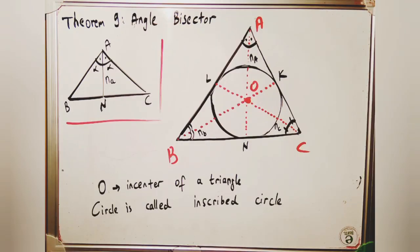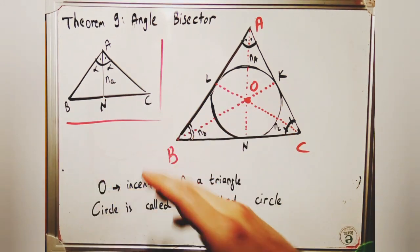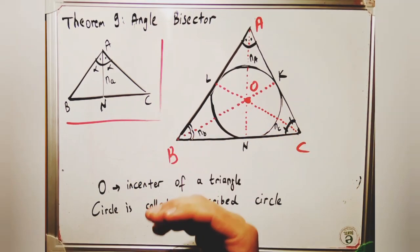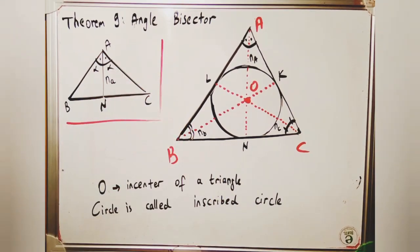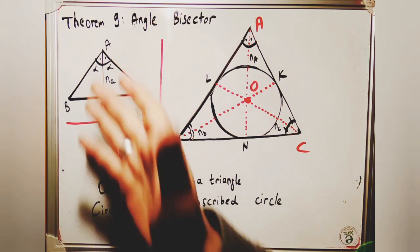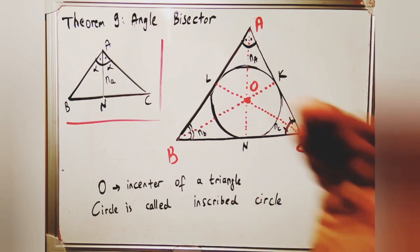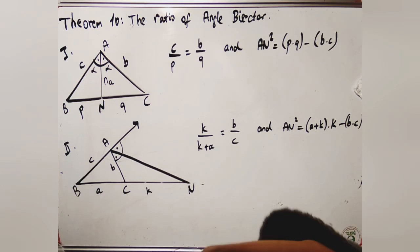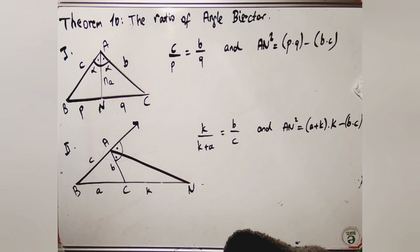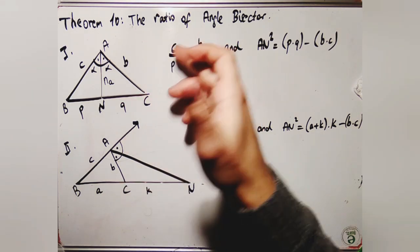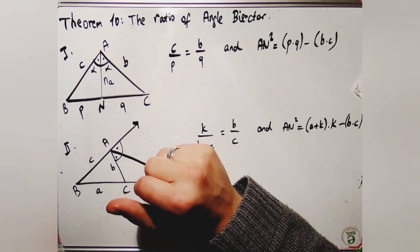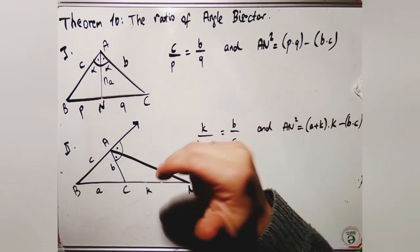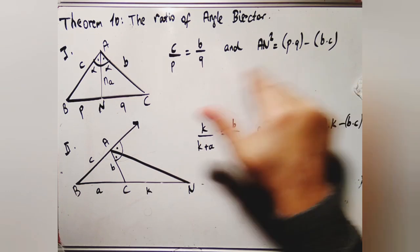Theorem 9 is the angle bisector. An angle bisector of a triangle is a line segment that bisects an angle and has an endpoint on the opposite side. The measure of angle BAN equals the measure of angle CAN because of the angle bisector. The intersection of all three angle bisectors is the incenter, and the inscribed circle is tangent to all sides. The ratio is: c/p = b/q. The length of angle bisector AN satisfies: AN² = p × q − b × c.